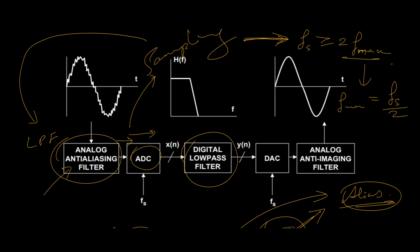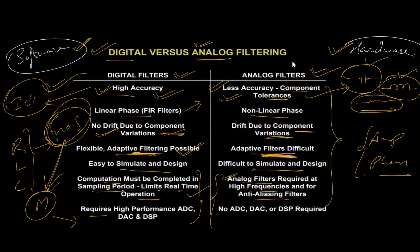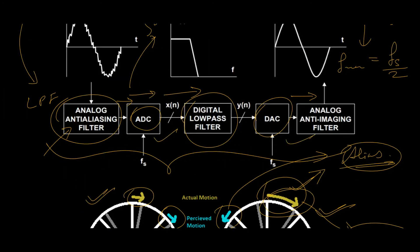The filtered signal is fed to the ADC for digital conversion and then processed through digital filters. At the output stage, there is a digital-to-analog converter, and that analog information is processed through an anti-imaging filter, which is again analog in nature. This whole process makes the system quite bulkier. The next limitation is that it requires ADC, DAC, and DSP circuitries or ICs, whereas in analog filters no such requirement exists. This is just to give an idea about analog and digital filters. With this note I would like to close the lecture. Thank you.